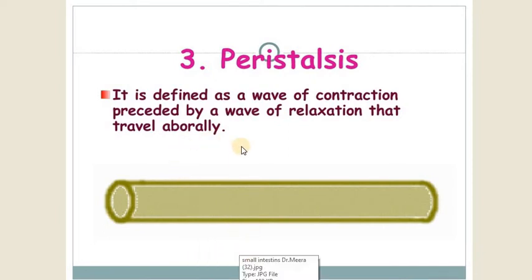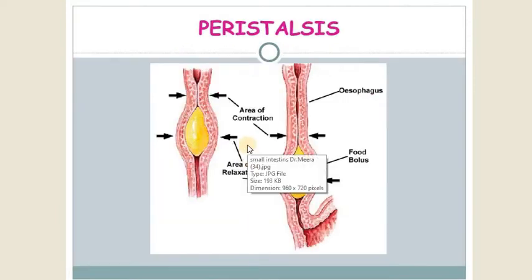The third movement is peristalsis. It is defined as a wave of contraction preceded by a wave of relaxation. This is the chief movement of the small intestine.